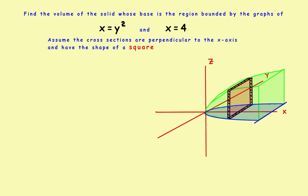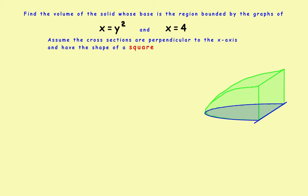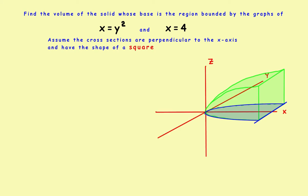Let's remove the axis and the section so you can see what you're actually trying to find — the volume of this green solid. To solve the problem, you don't necessarily need that green shape, but it helps to picture what it looks like to start with.